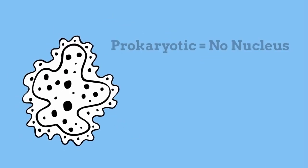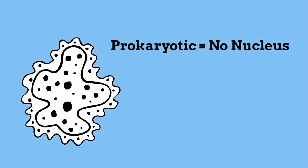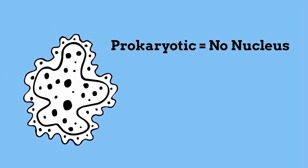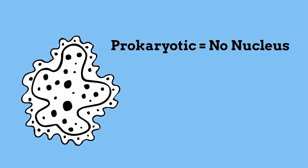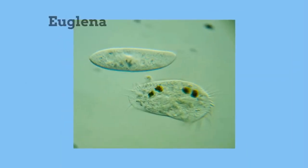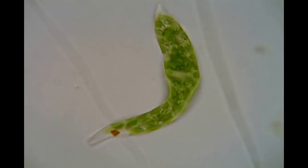Unicellular organisms have only one cell. Unicellular organisms can be both eukaryotic and prokaryotic. For example, bacteria are unicellular organisms that are prokaryotic, which means they do not have a nucleus or membrane-bound organelles. Euglena and paramecium are unicellular organisms that are eukaryotic, and they have a nucleus and membrane-bound organelles.